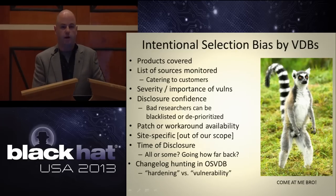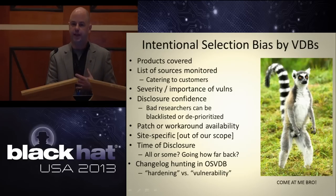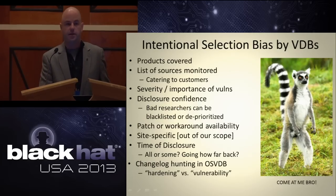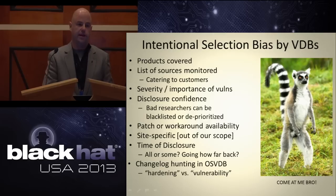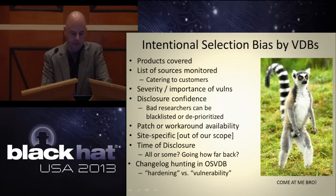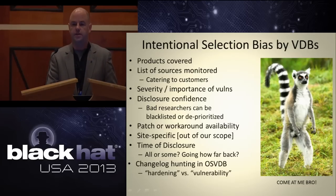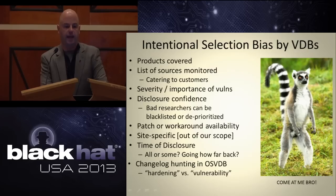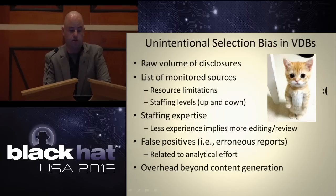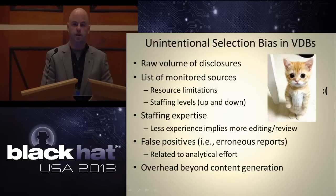Each VDB has a list of resources they monitor. For example, I monitor IBM product change logs and actually go read all of those. CVE generally does not. CVE monitors some sources that we generally do not. There's also wonderful inbreeding among VDBs and who watches whom. Selection biases include: patch or workaround availability, site-specific issues which are out of scope, time of disclosure, change log hunting. There are so many different ways our databases are biased and we don't even know all of them. There's also unintentional selection — raw volume of disclosures, the list of monitored sources, staffing expertise, false positives, and overhead beyond content generation.